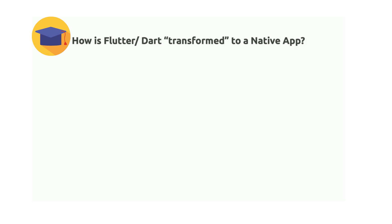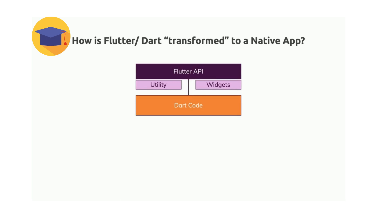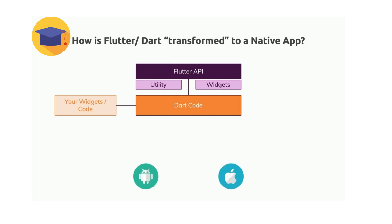How does Flutter and Dart work internally? How is your Flutter app actually converted to a native app which can be published to the app stores? You have your Dart code which uses the Flutter framework, or the Flutter API — application programming interface — which gives you a collection of functions and widgets you can use in your code to build the interface you want to build, composed of built-in widgets or your own custom widgets.